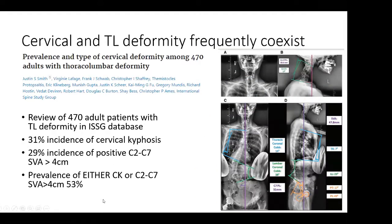A review of 470 adult patients with thoracolumbar deformity in the ISSG database looked at patients who had adult spinal deformity but were not undergoing surgery, tracking how many also had cervical problems. There was a 31% incidence of cervical kyphosis independently in those patients, as well as a 29% incidence of positive sagittal vertical axis in the cervical spine. The overall prevalence of some kind of cervical deformity in patients with thoracolumbar deformity was 53%. This tells us that in every patient with thoracolumbar deformity being worked up for potential surgery, we should also be considering the cervical spine — both in terms of how it's affecting the patient and how it's going to react to surgery.